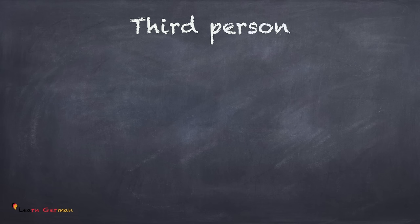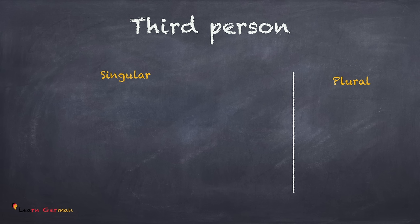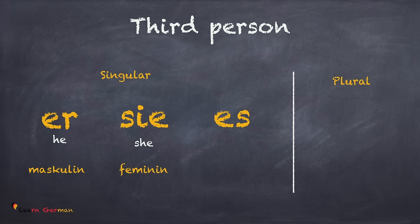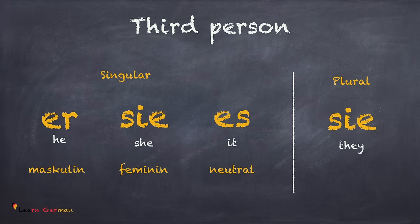Let's move to the personal pronouns for the third person. The third person you're talking about can also be in singular or in plural. The pronouns in the third person are also gender specific. If you're talking about masculine in the third person, you would use er; for feminine, you would use sie; and for neutral, you would use es. And if you're talking about more than one person, you would use sie.